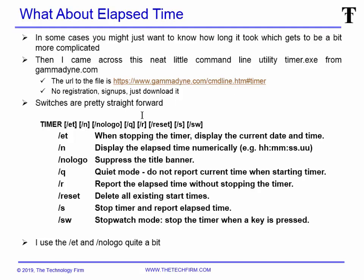I use two switches all the time. When you stop the timer, I use '/et' which displays the current date and time, just to have a notation. When you start the timer, it automatically tells you the date and time, so no '/et' is required at start — only when you stop the timer. The other switch is '/nologo' — I don't want to see the title banner, you don't need to see that.